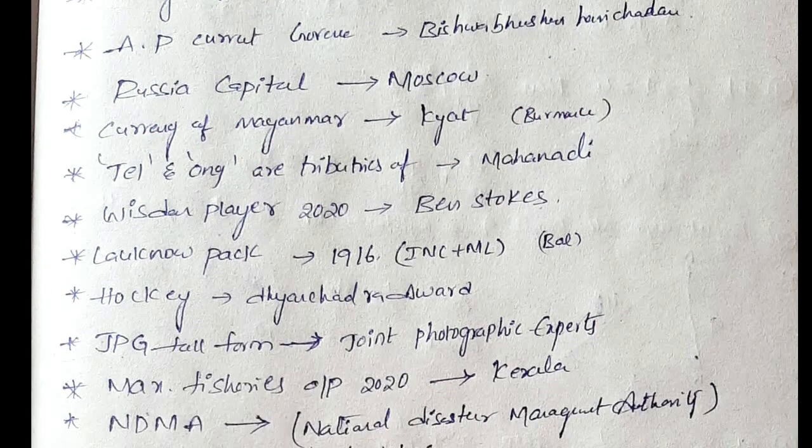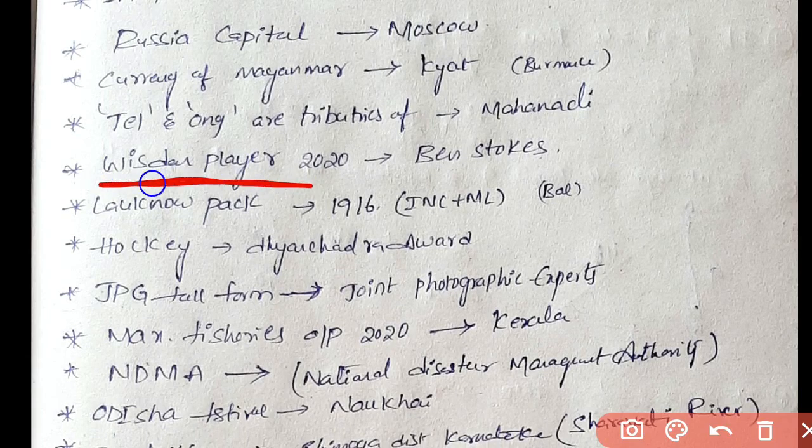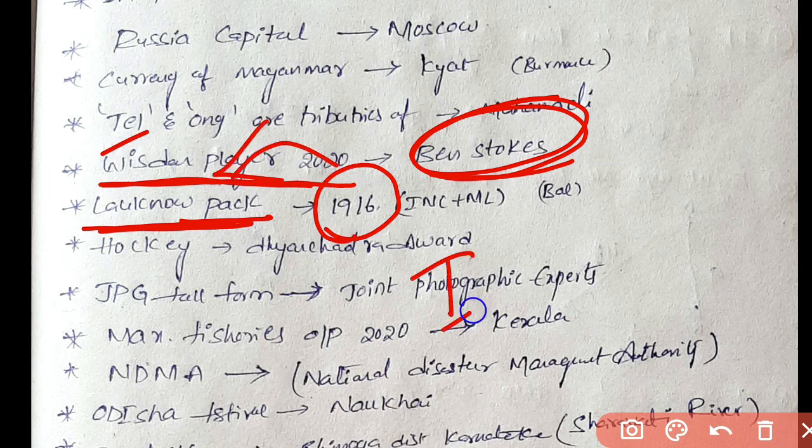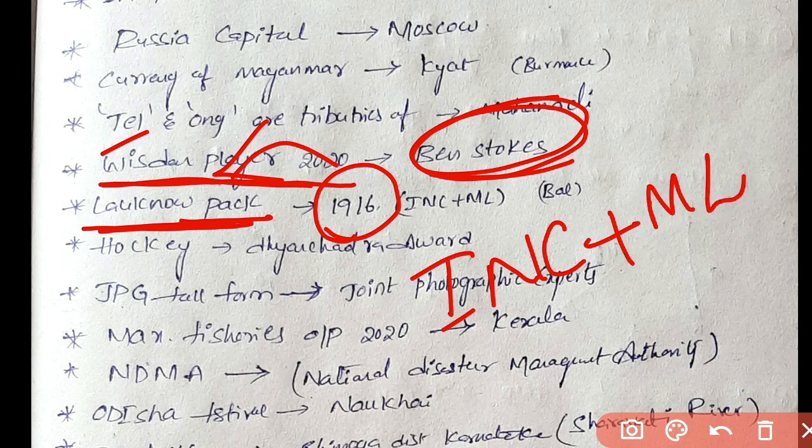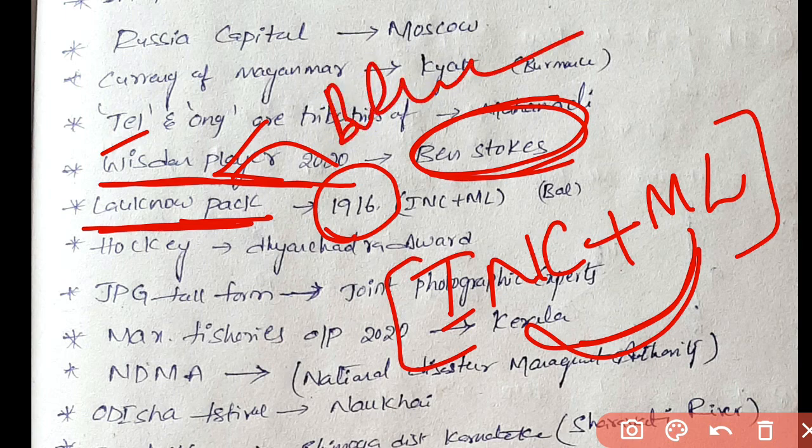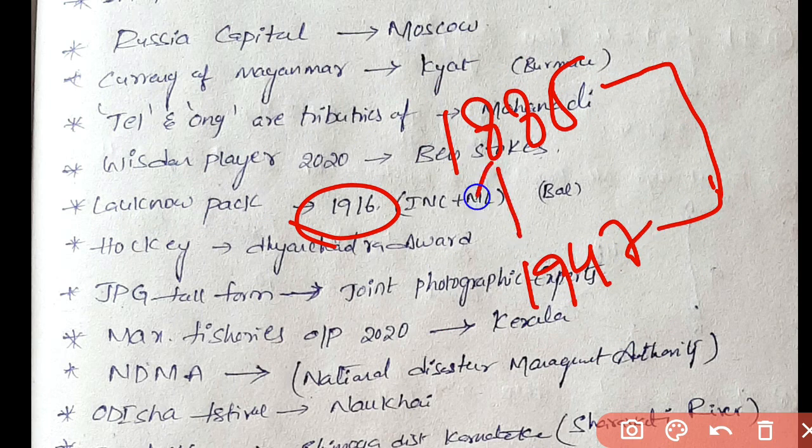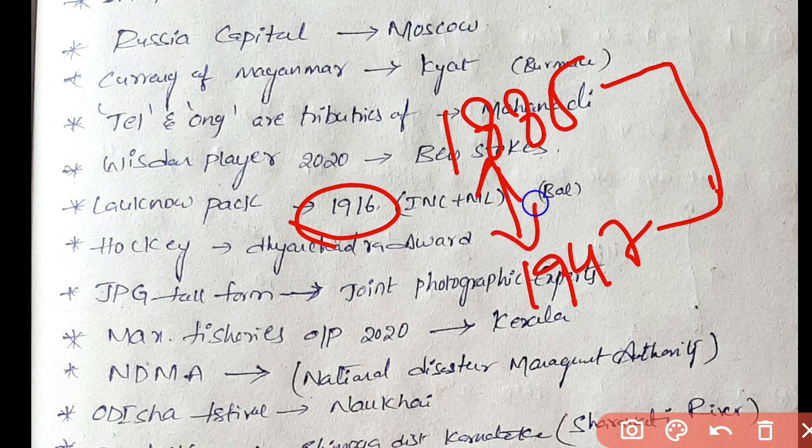Wisden player 2020 is Ben Stokes. Lucknow Pact, Lucknow Pact was in 1916. This pact was between Indian National Congress and Muslim League. Indian National Congress was formed in 1885 and continued until 1947. All the pacts should be known.